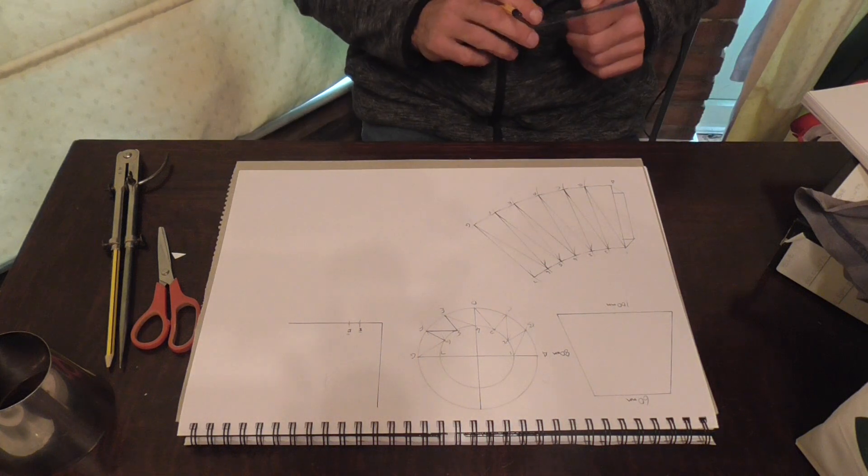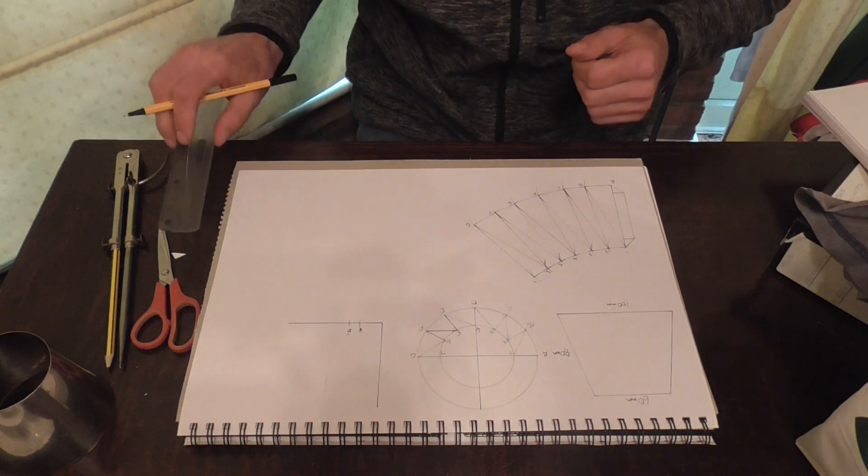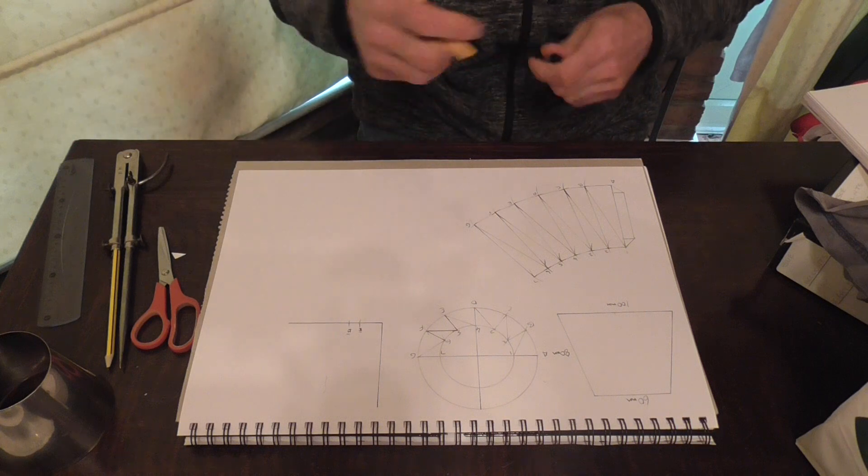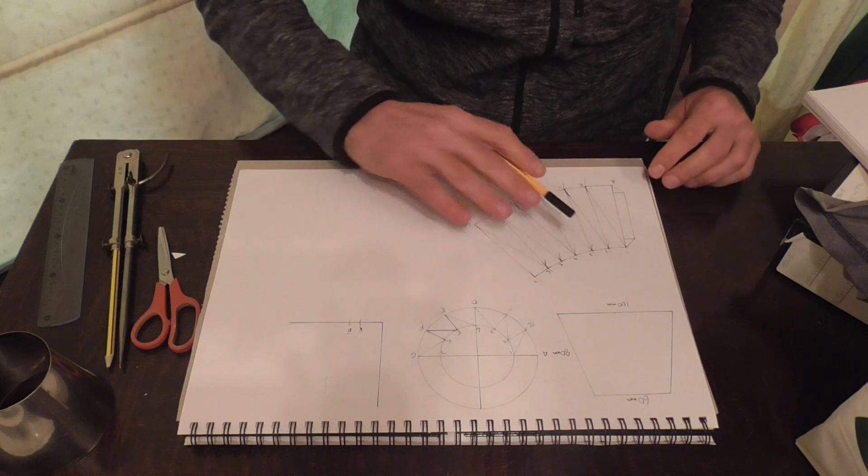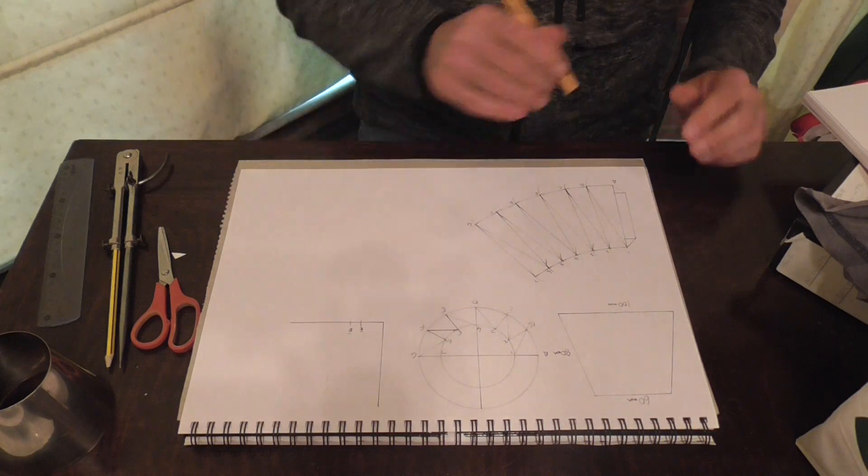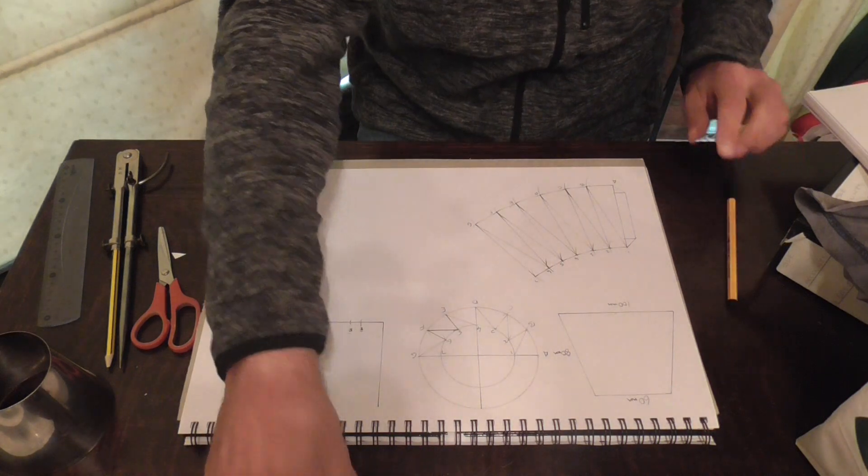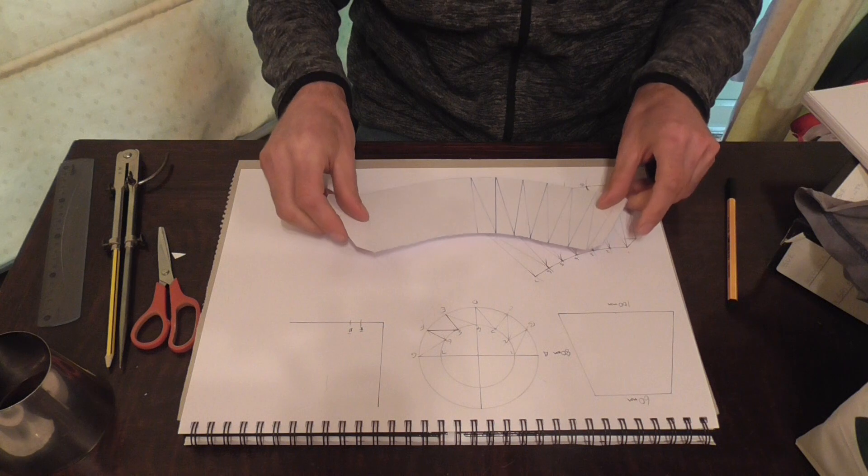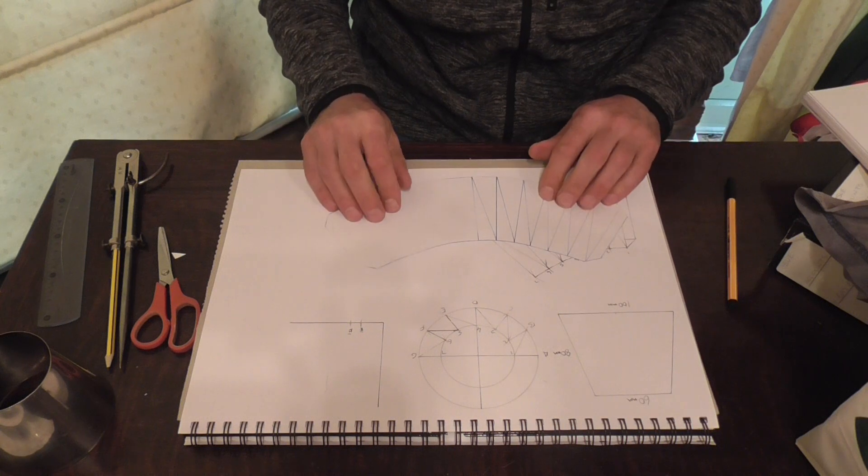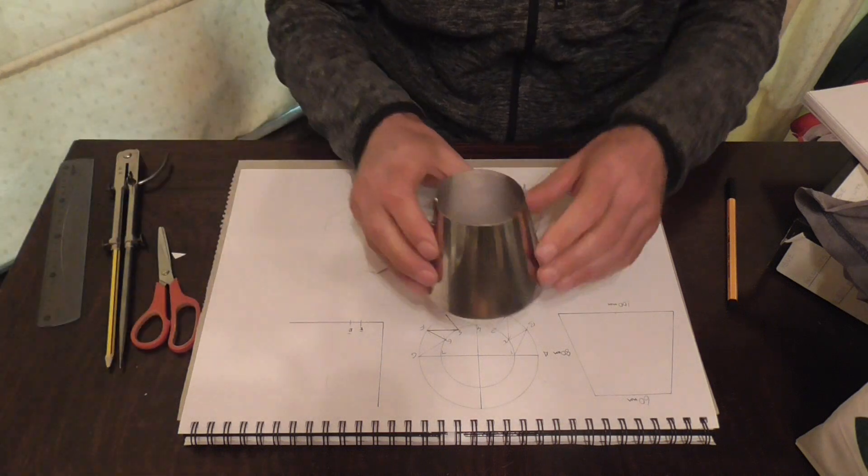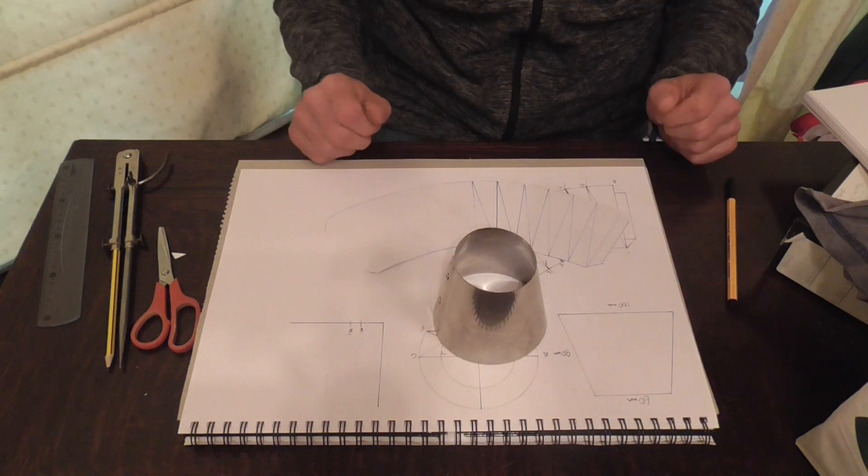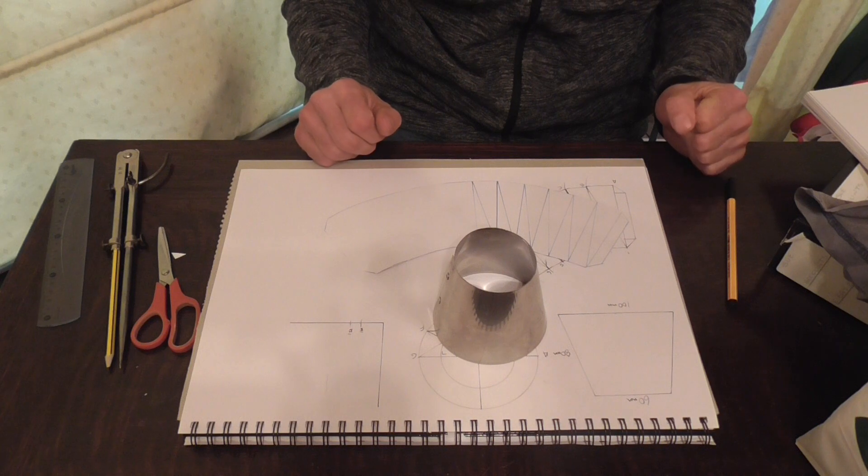So that's half our pattern. What we would do next is we would cut that out, fold it over, draw around it and cut it out again, which will give us this. When we have made this we place this on a sheet of metal, draw around it, and we end up with this, which is our finished product.